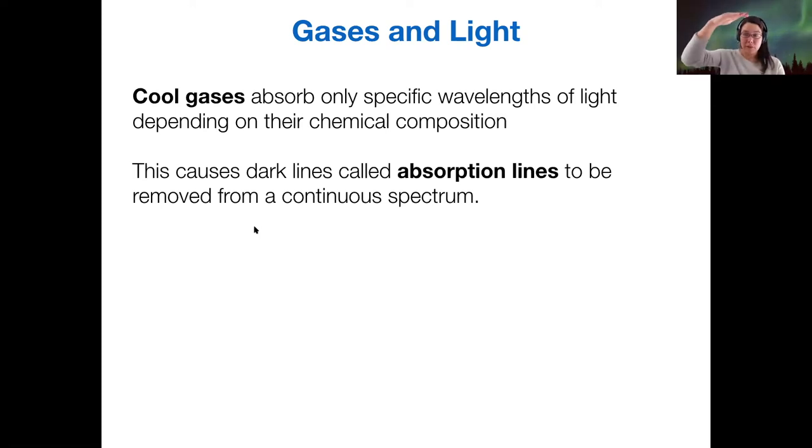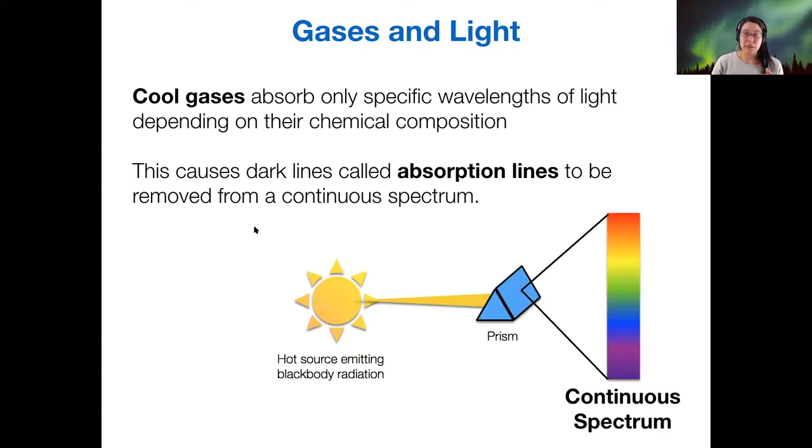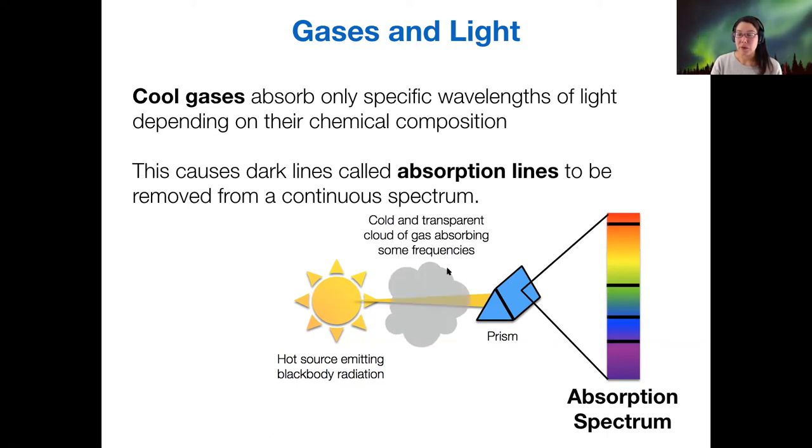When we have a continuous spectrum, like a rainbow that we get from a prism, and we pass that through a gas, then the continuous spectrum is produced just by the source. This light is produced by the source. And then the specific atoms or molecules within the gas, they take away some of the light because they absorb it. And so we end up with dark lines in our spectrum. And now this is called an absorption spectrum, because some of the light has been absorbed by the gases in between. So the absorption spectrum, the location of all these dark bars, that depends on what kind of atoms and molecules are in my gas. But the overall amount of light in my spectrum, that depends on my source.